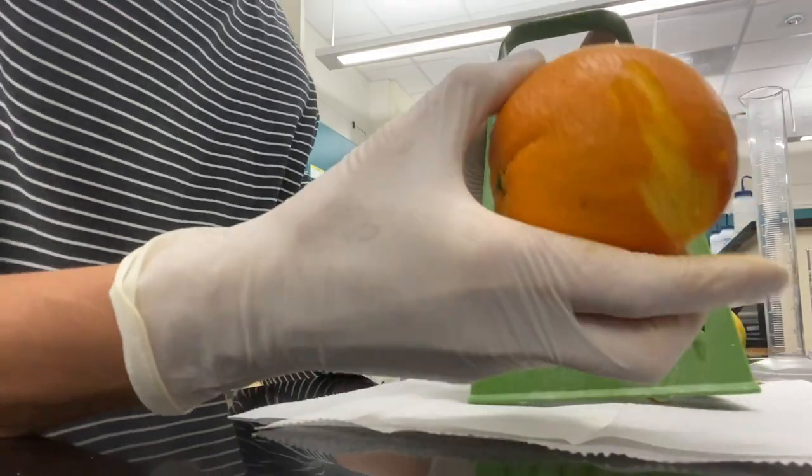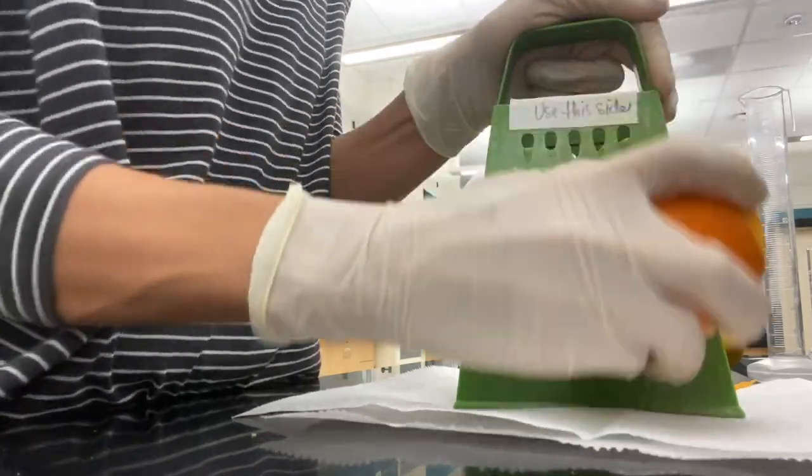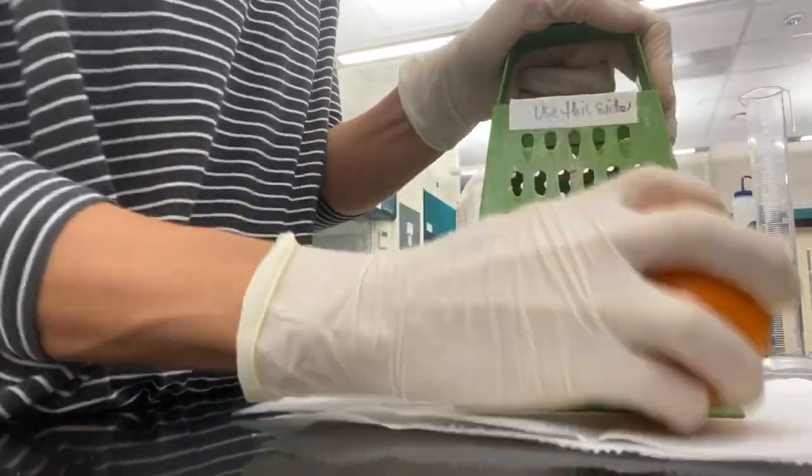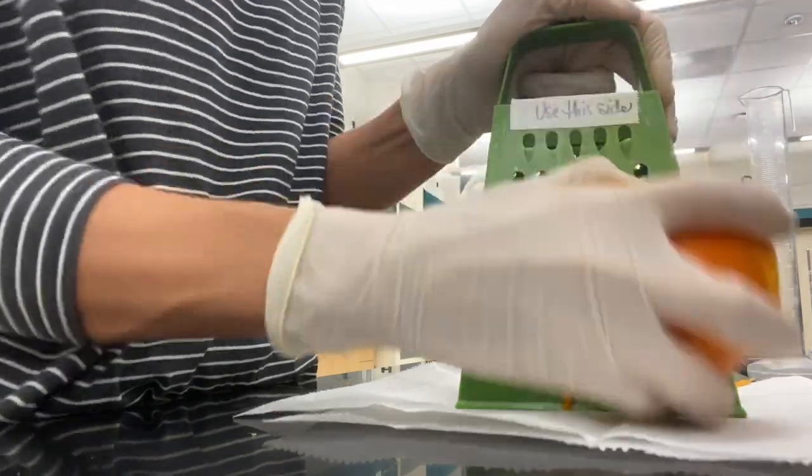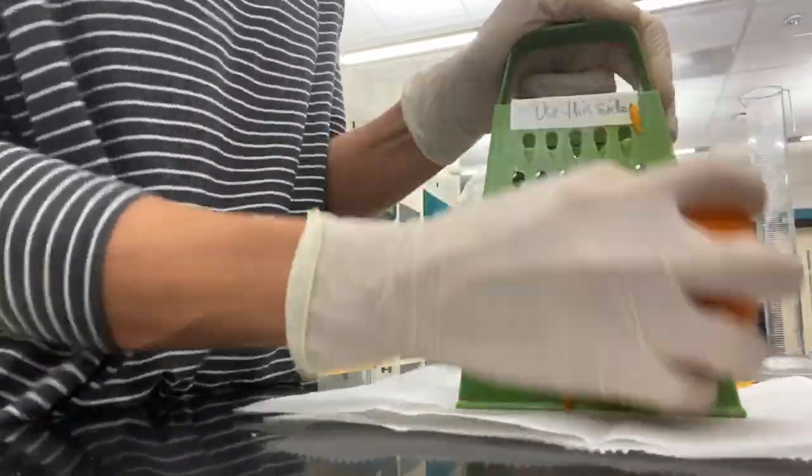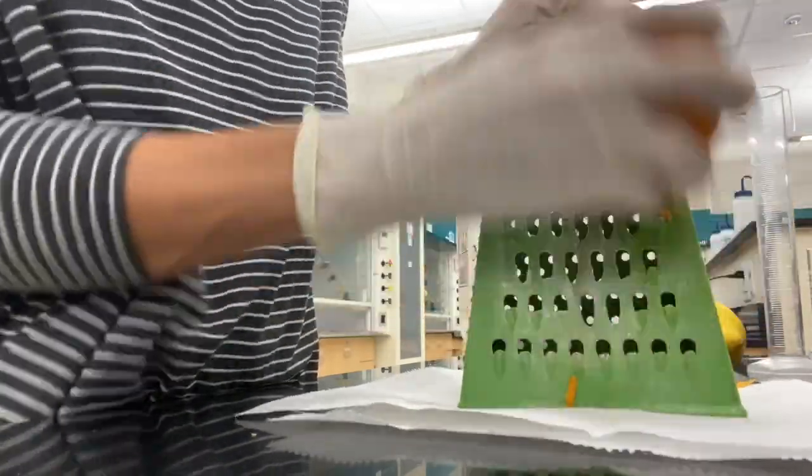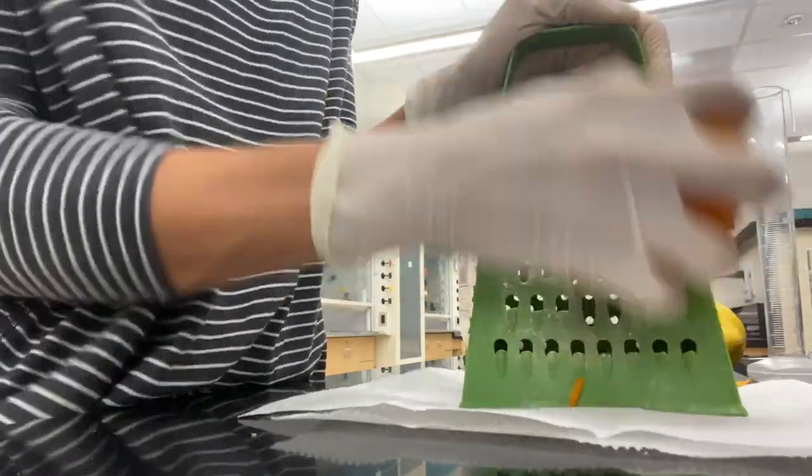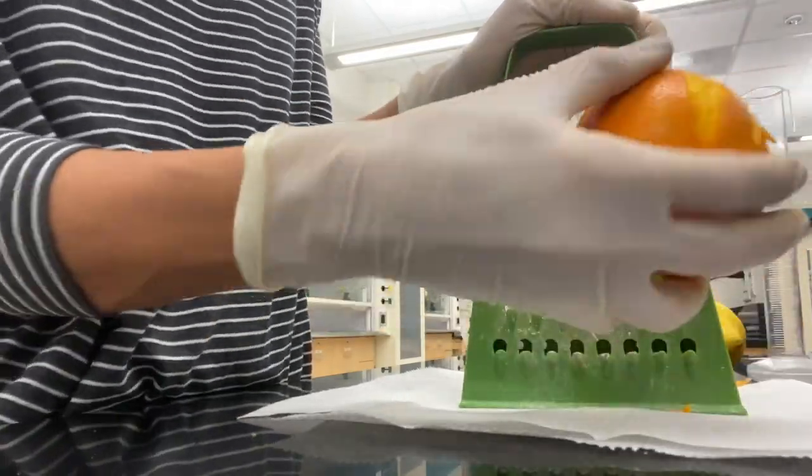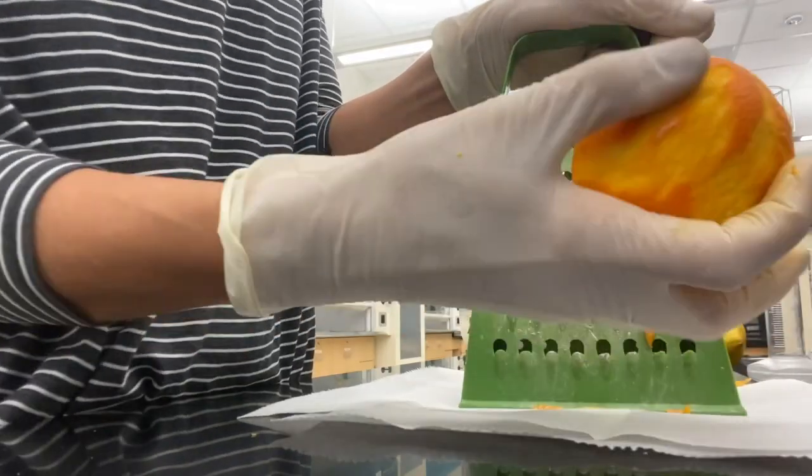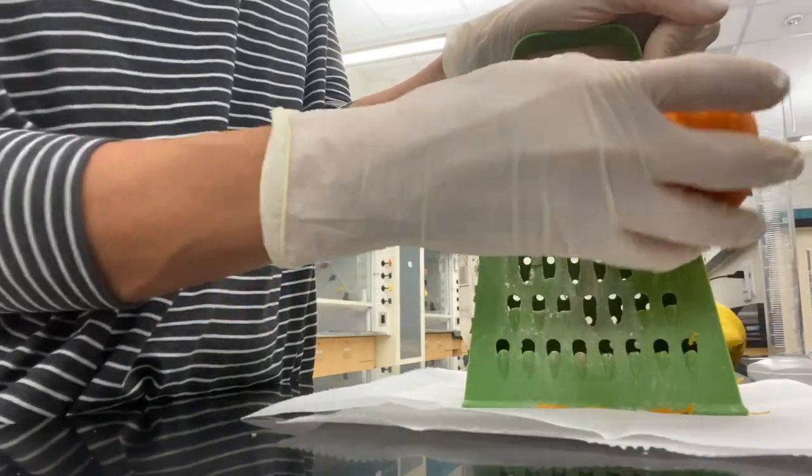The first thing we need to do is the fun part. We're going to use this big grater and grate off some orange rind. You see that I'm just getting off the orange part, not grating so much that I'm getting to that white area. Most of that limonene is going to be found in the orange of the orange rind. I want roughly three grams.